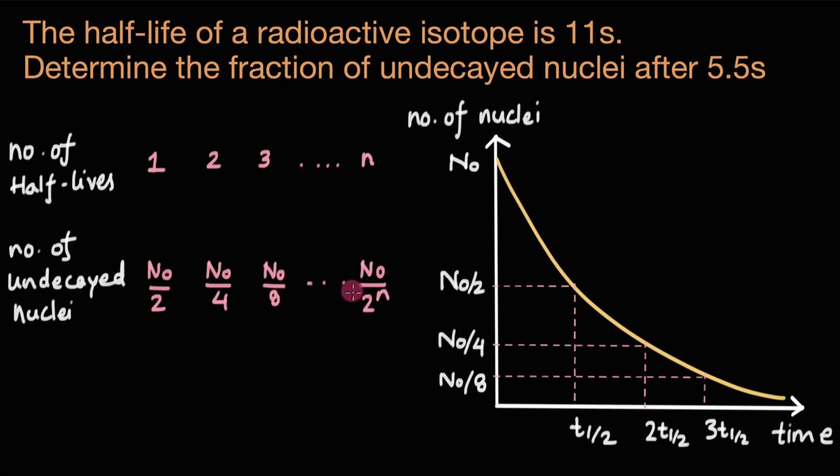So the number of undecayed nuclei after half of half-life, that would be N0 divided by 2 to the power 1 by 2, or we can write this as N0 divided by root 2.